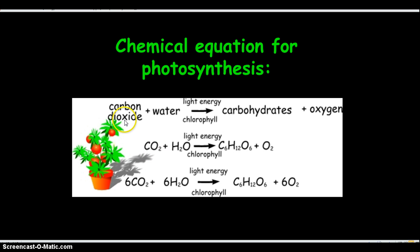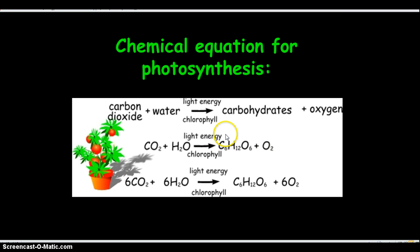CO₂ is the chemical formula for carbon dioxide, and H₂O is water. When you take these two and add light energy and chlorophyll, it produces glucose plus oxygen gas — so plants are making their own glucose. The third equation is what we call the balanced equation, where you have to have the same number of atoms on both sides. You'll see this more in chemistry class.